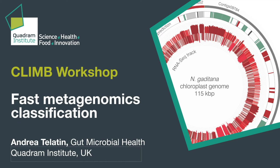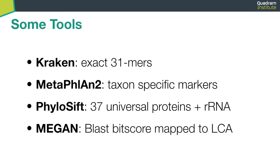Now it's time to try to classify a FastQ dataset coming from the sequencer with a tool. We have different possibilities when it comes to software tools, and each software has its advantages and disadvantages. For example, we have Kraken, which is based on exact k-mers — in particular 31-mers — that try to make maximum use of all the available genomic sequences.